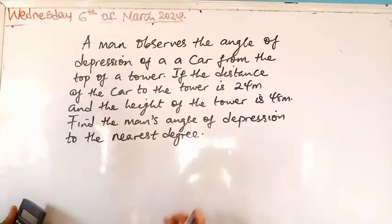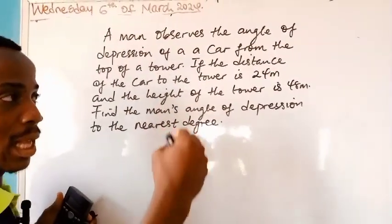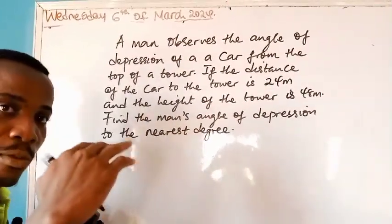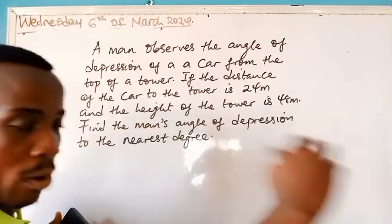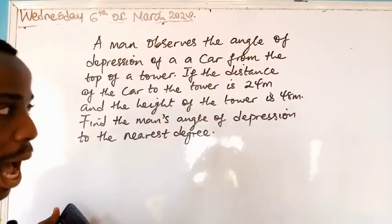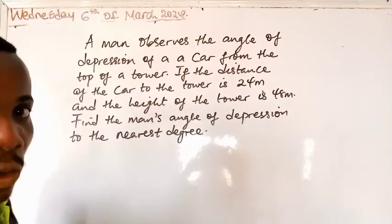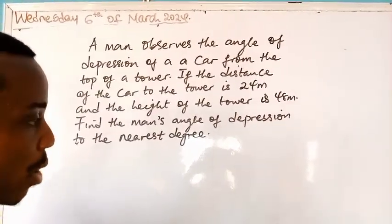So first of all, angle of depression is the angle that is formed between a viewer's horizontal sight and the line at which he brings his sight down to view an object that is below him or her.